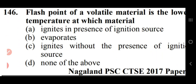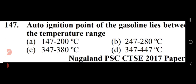Flash point of a volatile material is the lowest temperature at which the material ignites in the presence of an ignition source — option A. The auto-ignition temperature of gasoline lies in the temperature range of 247°C to 280°C — option B.